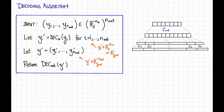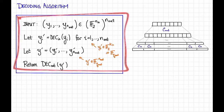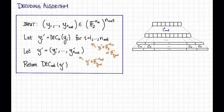The next thing we need to do is talk about what decoding algorithm we're going to use. Here's our decoding algorithm. This might look somewhat familiar — this is actually the same decoding algorithm that we started out with when we were talking about decoding concatenated codes for worst-case errors. For worst-case errors, we had to do a bunch of fancy stuff. But it turns out that for random errors, we don't have to do fancy stuff at all — this algorithm works just fine.